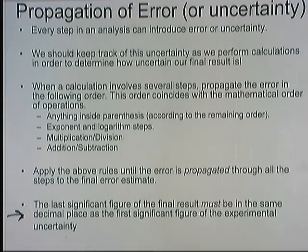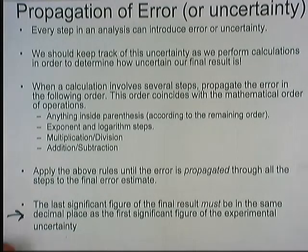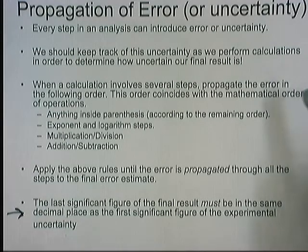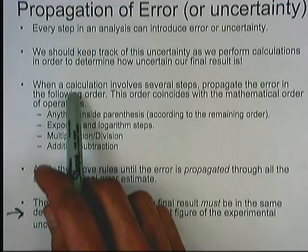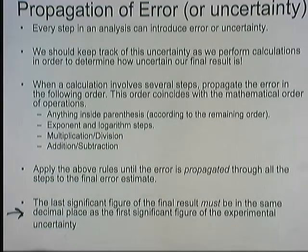We want to track uncertainty through our calculations. If we divide a mass by a molecular weight to get moles, then convert to a concentration by dividing by a volume, each mathematical step needs its uncertainty tracked. If a calculation involves several steps, you propagate the error following mathematical order of operations: parentheses first, then exponentiation and logarithms, then multiplication and division, then addition and subtraction.